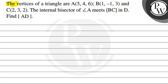The question says: the vertices of a triangle are A(5, 4, 6), B(1, -1, 3), and C(2, 3, 2). The internal bisector of angle A meets BC at point D. We have to find the length of AD.